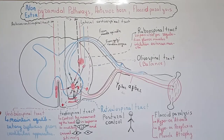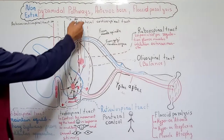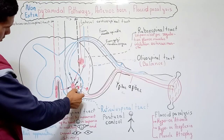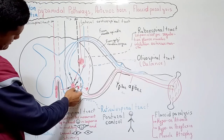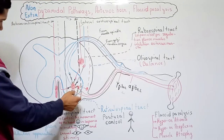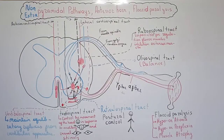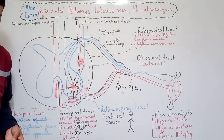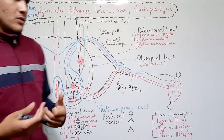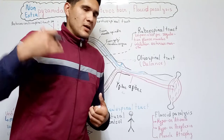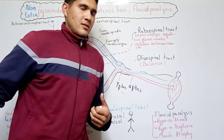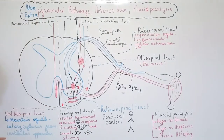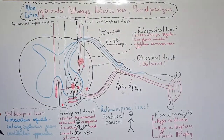The first one is the vestibulospinal tract. Its direction is shown here — that's the vestibulospinal tract. Without any interneurons, it connects directly with alpha motor neurons. The main function of the vestibulospinal tract is maintaining equilibrium. For example, when you bend to the left side, the muscles of your right side contract to balance your body.